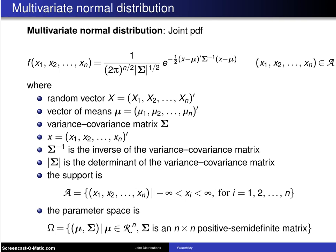In some ways it deserves more than just three or four slides. Entire books have been written on the multivariate normal distribution. To begin with its joint PDF is f of x1 up to xn and you can see it is written here in matrix form fairly compact.